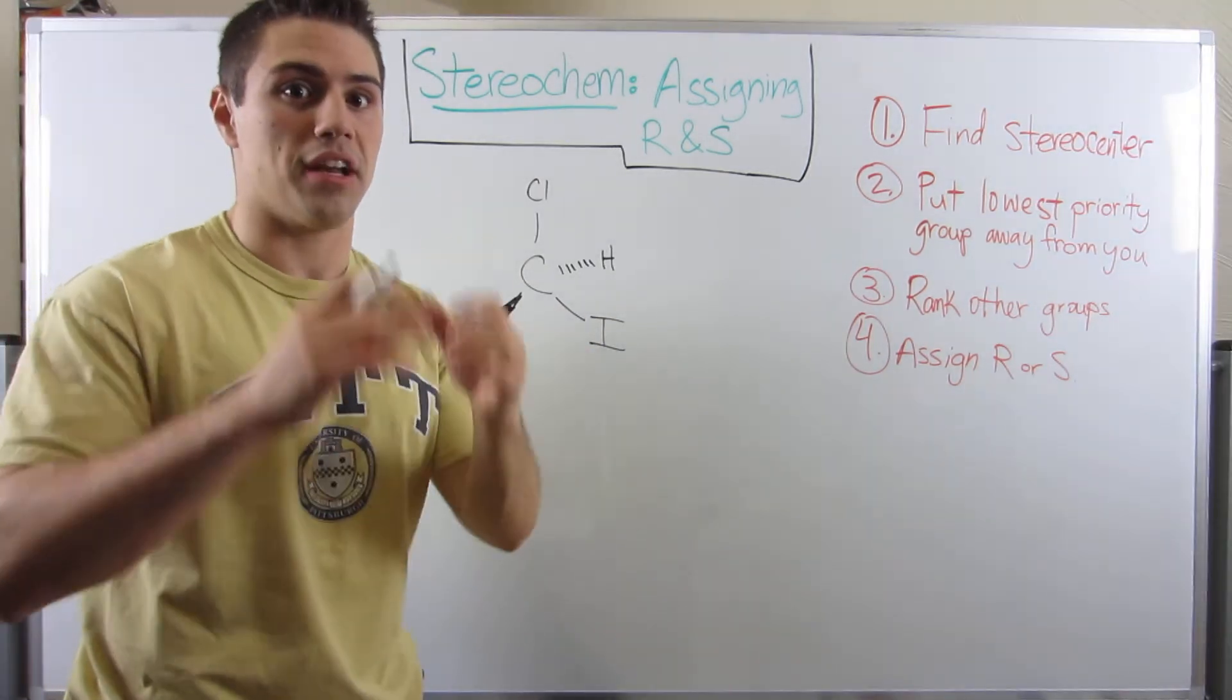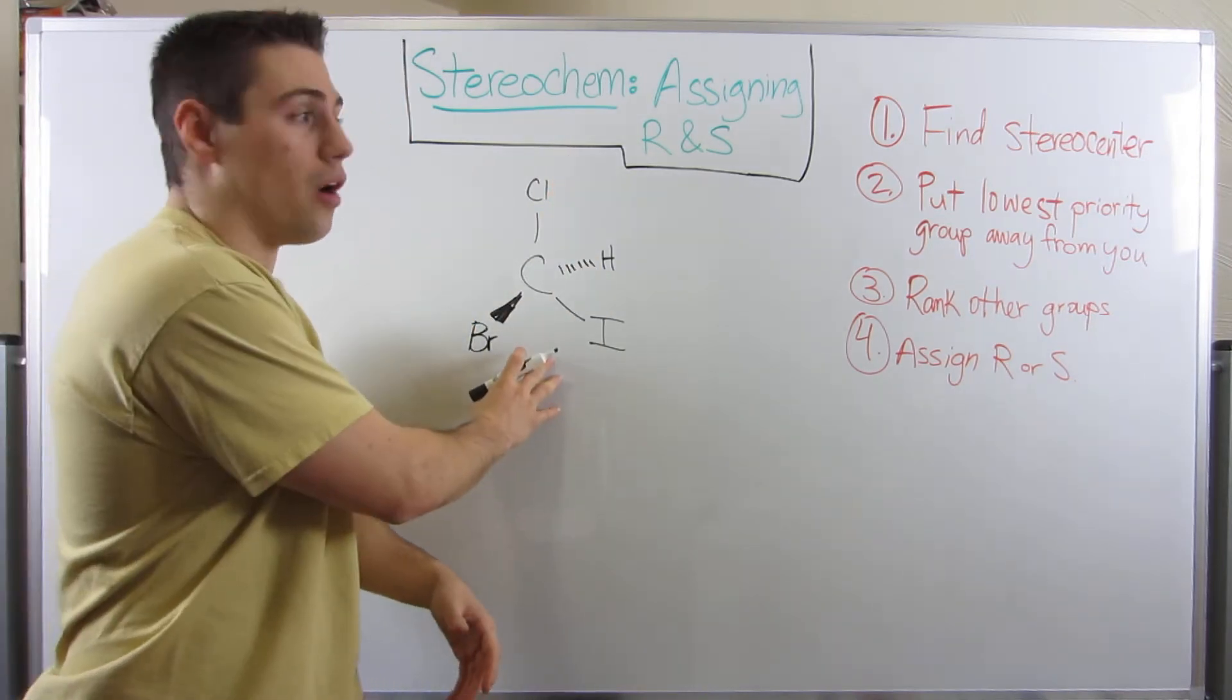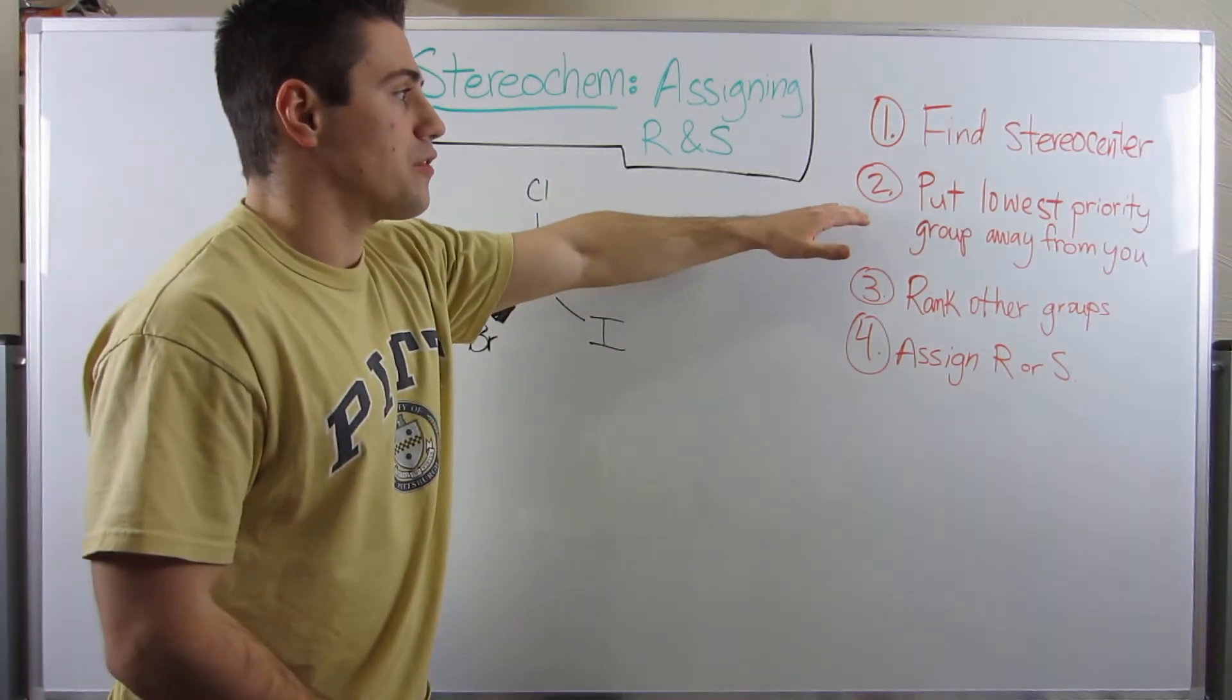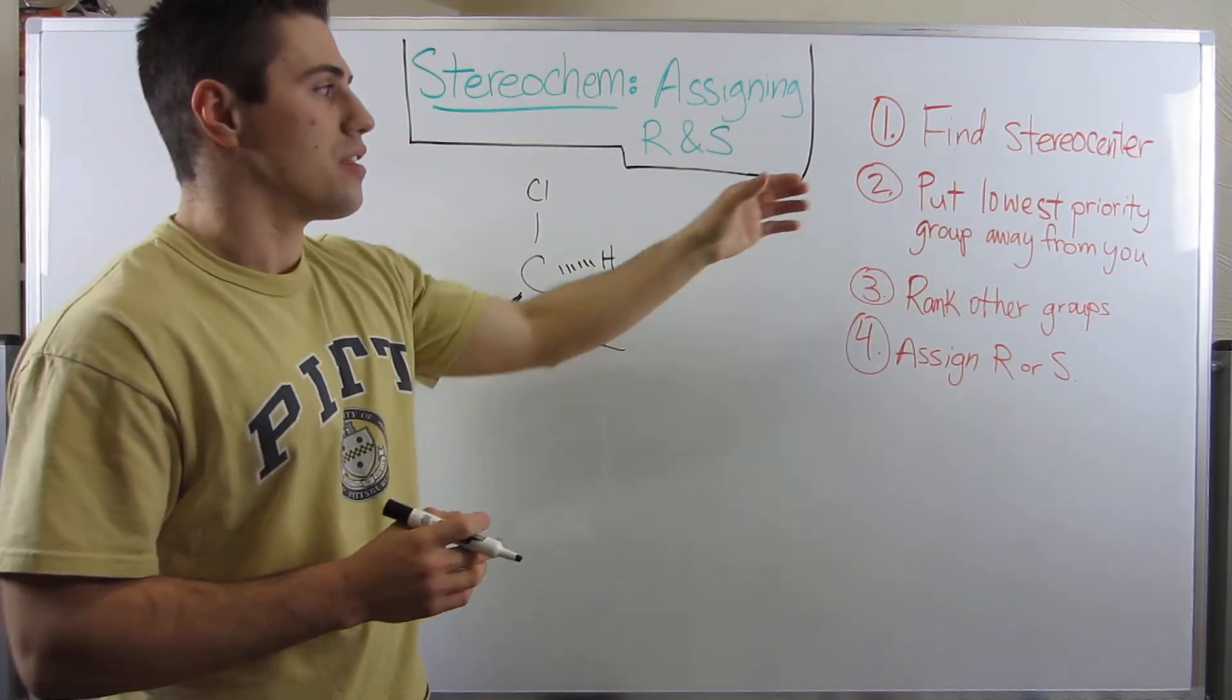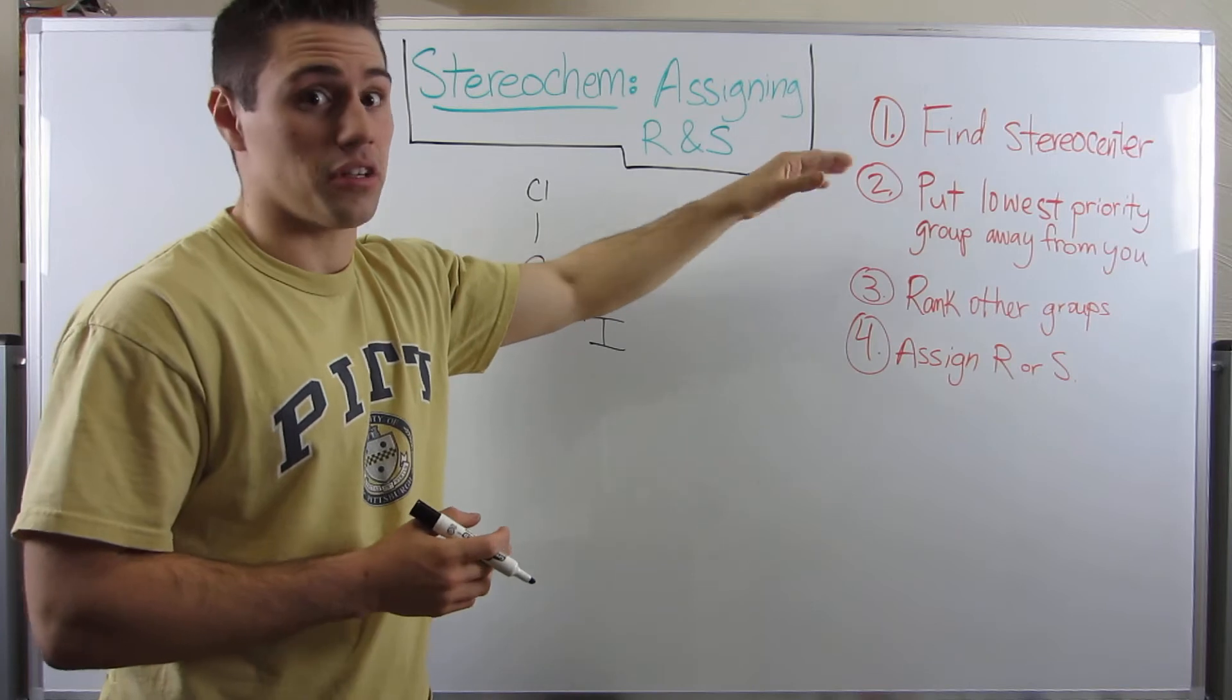Obviously we're going to start small. The next thing you do is you have to make sure that your lowest priority group is away from you or towards you. This one is going to be made more clear through more examples.